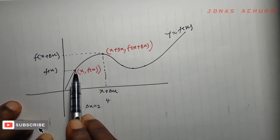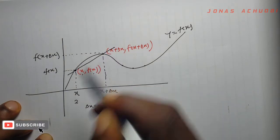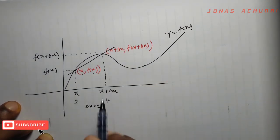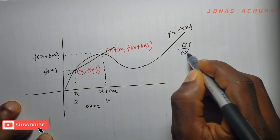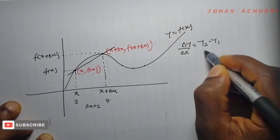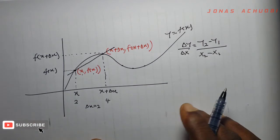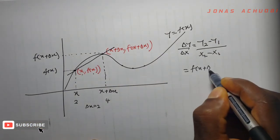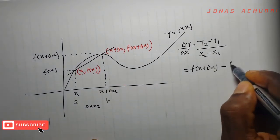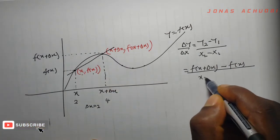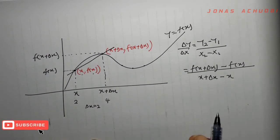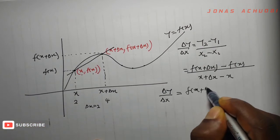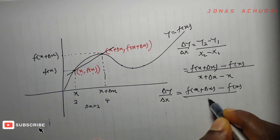To find the slope of the point x, f of x, we simply find the slope of the secant that joins these two points on the curve. So the slope of the secant is change in y over change in x, equal to y2 minus y1 divided by x2 minus x1. Our y2 is f of x plus a change in x, and our y1 is f of x. So the slope equals f of x plus Δx minus f of x, divided by Δx.